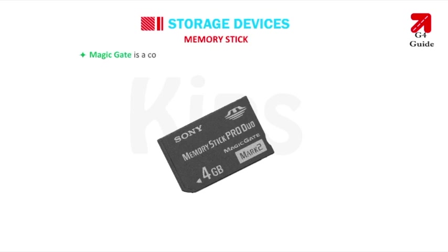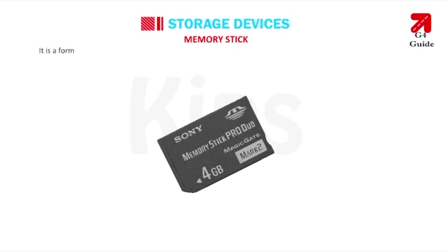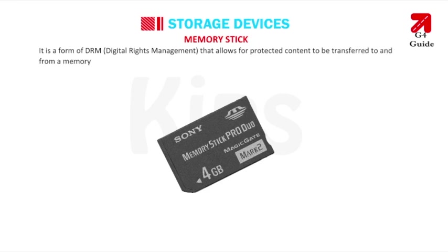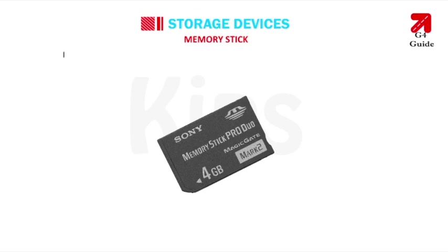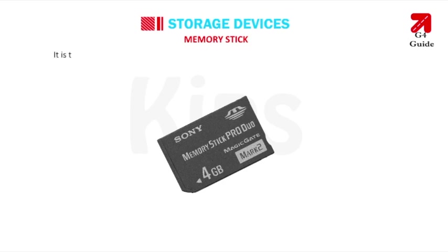MagicGate is a copy protection technology introduced by Sony in 1999. It is a form of DRM — Digital Rights Management — that allows protected content to be transferred to and from a memory card and used on devices such as an MP3 player or cellular phone. It encrypts data stored on a card and enforces control over how files are copied. It is typically used for audio and video but can also be used for other content formats.